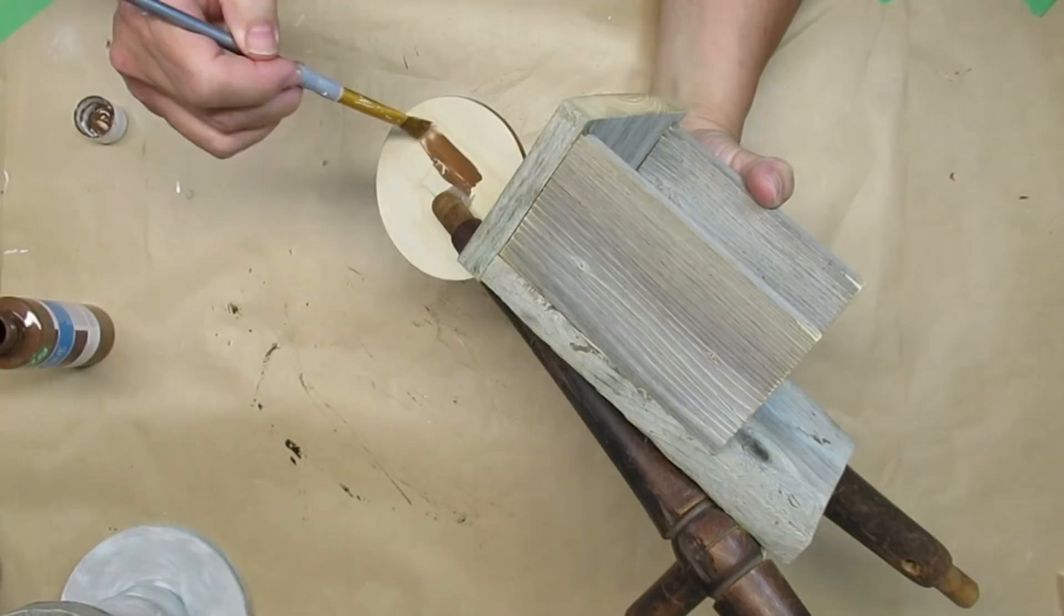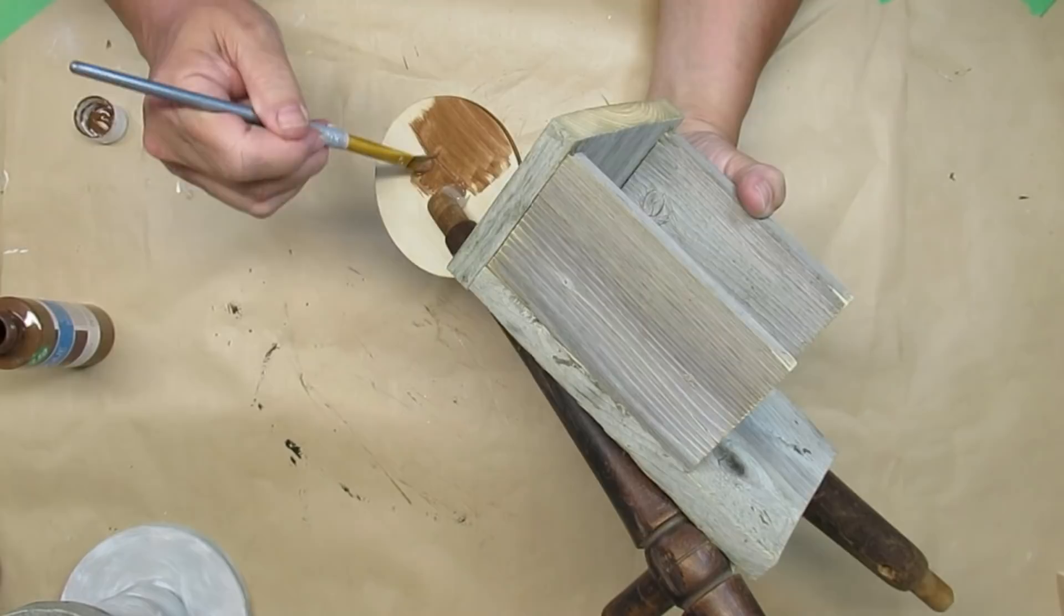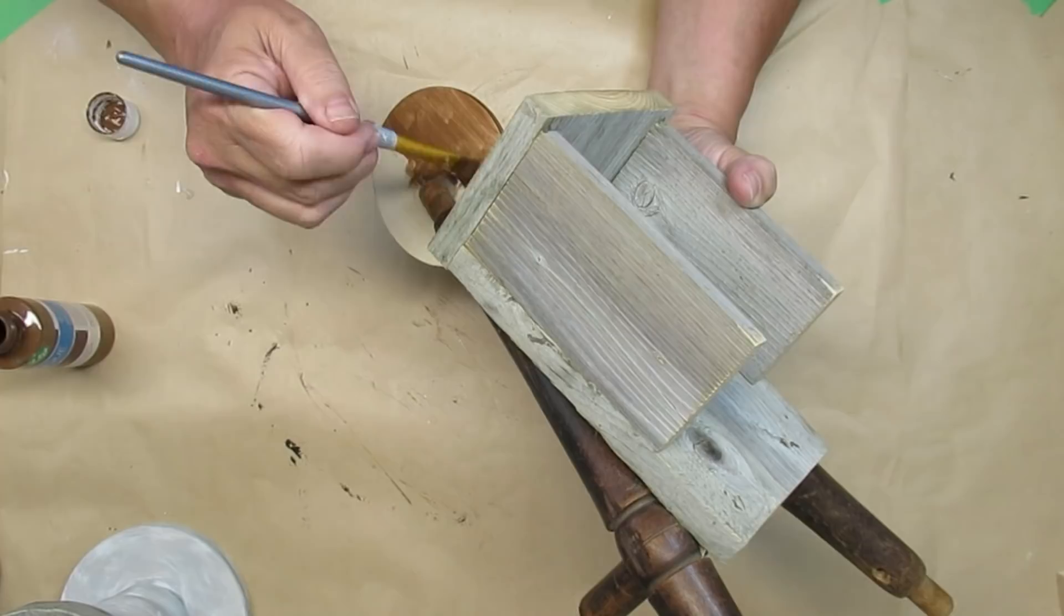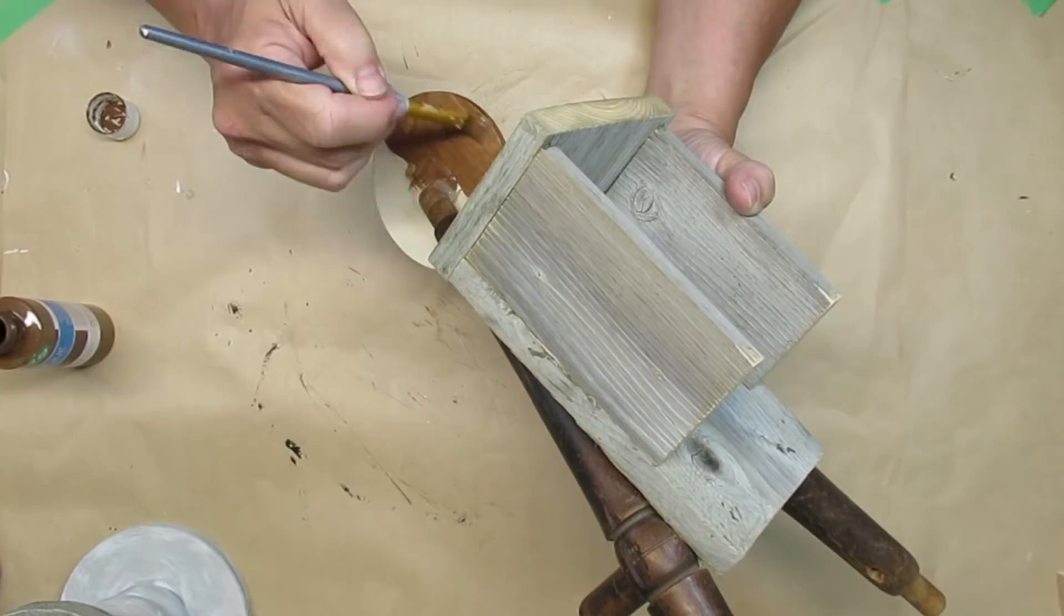I want the wheel to be brown like the spindle, so I'm just using some acrylic paint in somewhat of a matching color. I'm going to give this one coat. It's going to look like it's been stained.